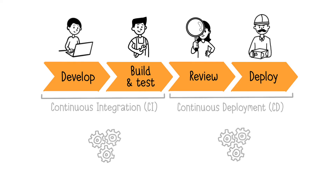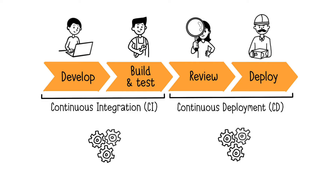Continuous Integration aims to automate operations related to development, while Continuous Deployment focuses on automating deployment operations. Implementing a CI/CD pipeline seeks to eliminate time-consuming manual human activities. The goal is to automate as many steps as possible to take development all the way to production, in order to speed up software development and shorten delivery cycle time tremendously. The desired advantage is the ability to deploy new features more frequently — possibly every week or even daily.